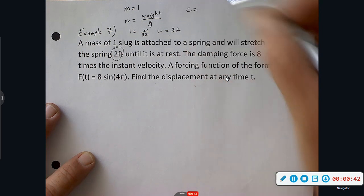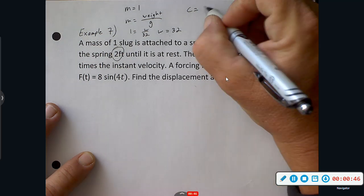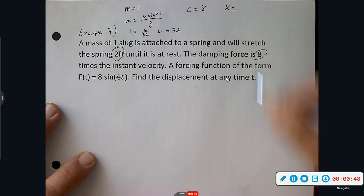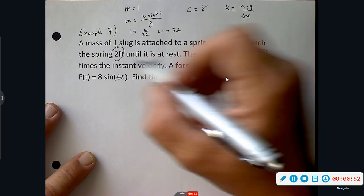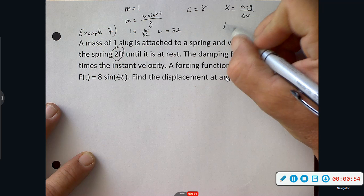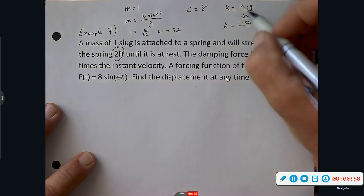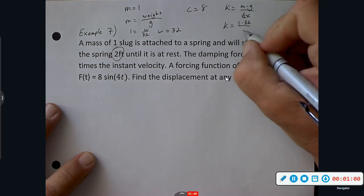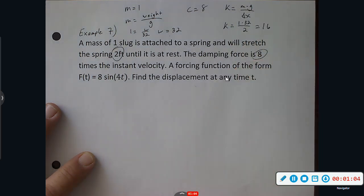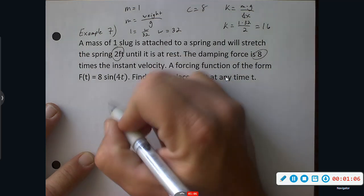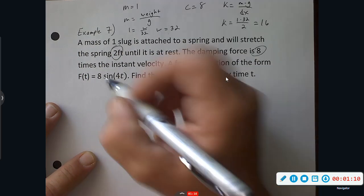C just tells us eight times the instant velocity. M, G, change in X, change in X two feet. M, G, mass is one, gravity is 32, which is just really your W, right, over two, that's 16. Okay, so we have some data. eHoodieMath.